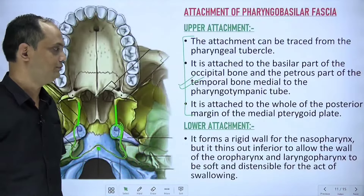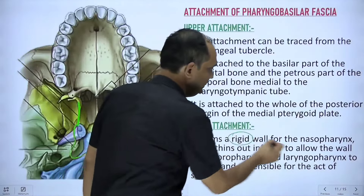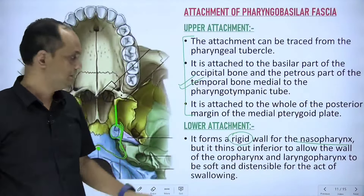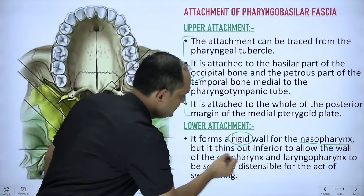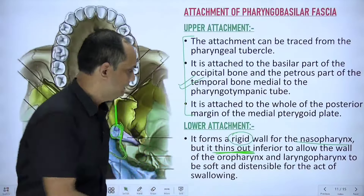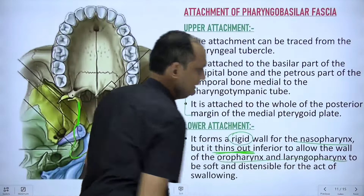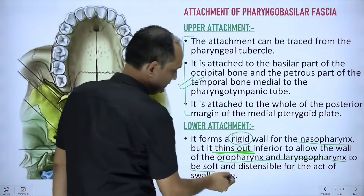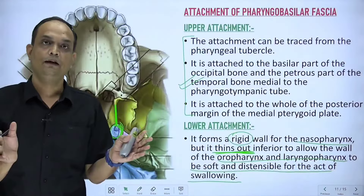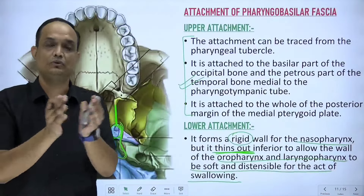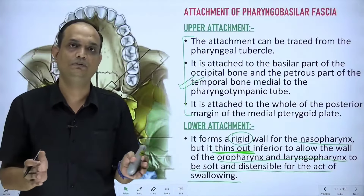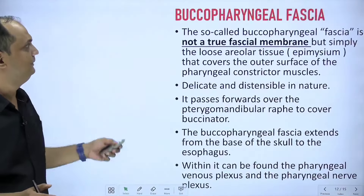The pharyngobasilar fascia is rigid only in the nasopharynx, allowing the wall to prevent collapse and keep the nasopharynx patent. However, it thins out as it goes downward — inferior to the nasopharynx, it thins out and in the oropharynx and laryngopharynx it is not thick. This is because it keeps the wall soft and distensible to allow swallowing. The function of the oropharynx is to allow swallowing, for which you need elasticity and distensibility.